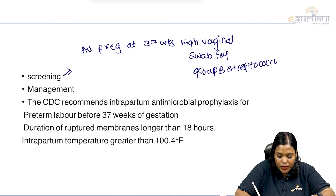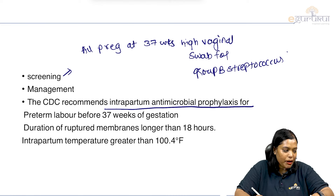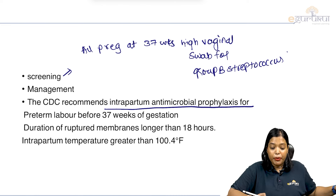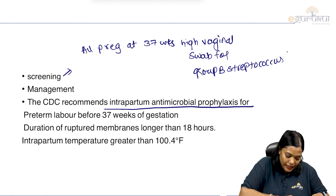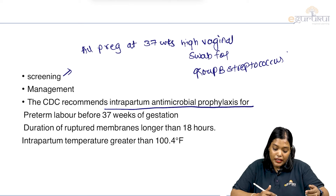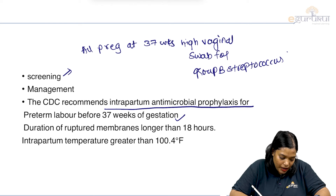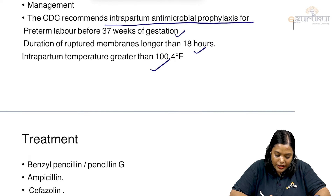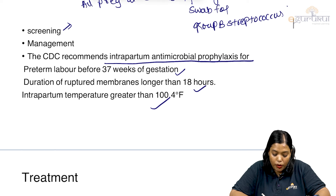Earlier, as per Williams, the CDC recommended intrapartum antibiotic prophylaxis for preterm labor before 37 weeks of gestation, duration of rupture of membranes longer than 18 hours, and intrapartum temperature greater than 100°F. But now, all pregnant women at 37 weeks are screened with a high vaginal swab, and if positive for group B streptococcus, we give treatment.